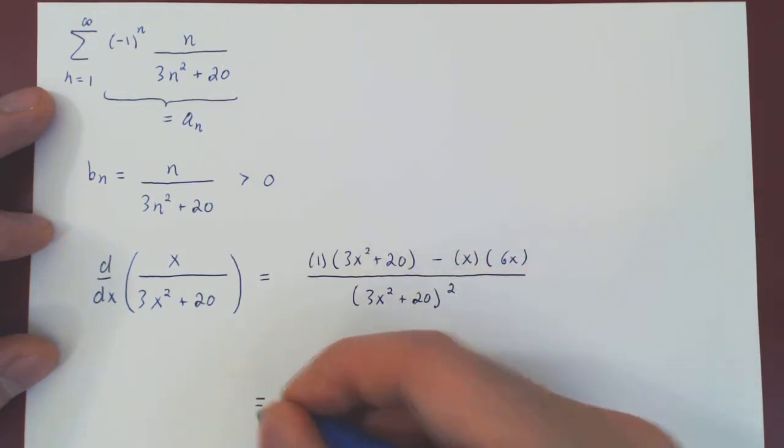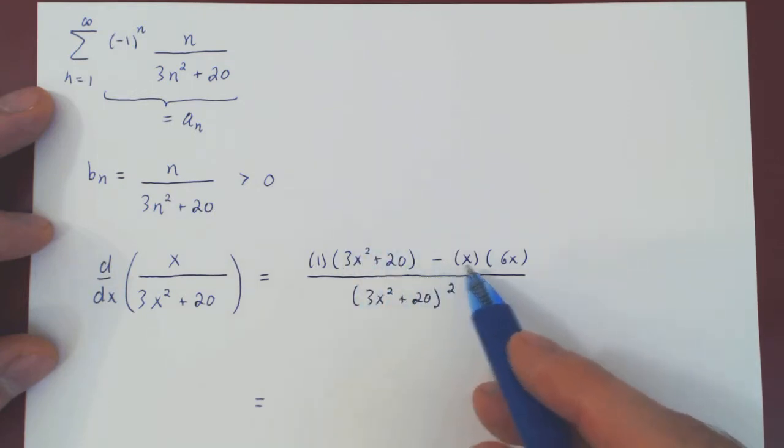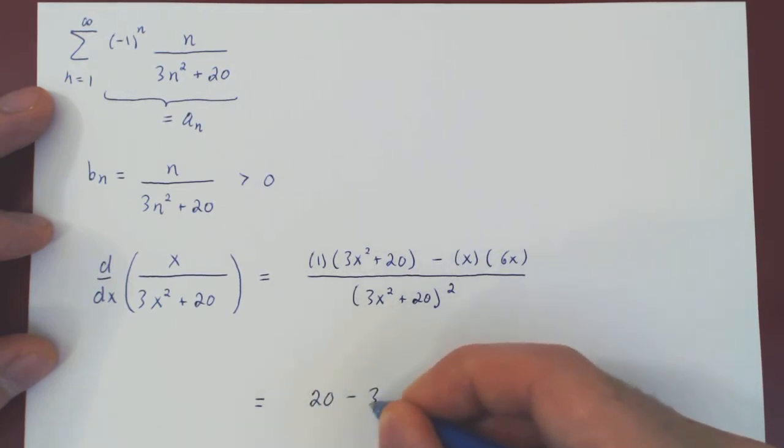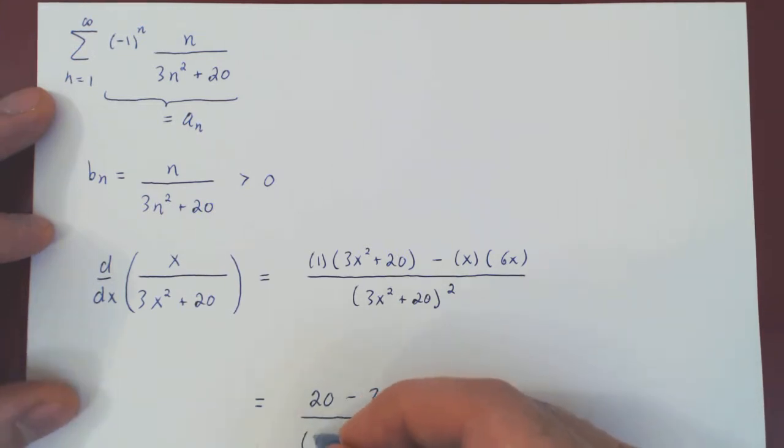We can simplify. So we'll have here 3x squared minus 6x squared, so negative 3x squared plus 20, or if you prefer 20 minus 3x squared, all over 3x squared plus 20 squared.